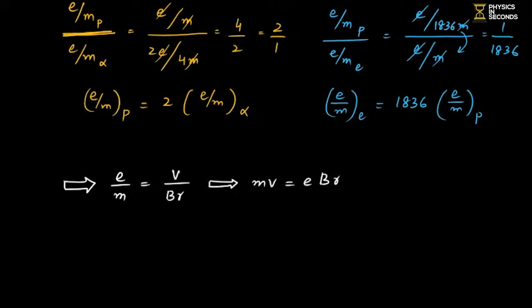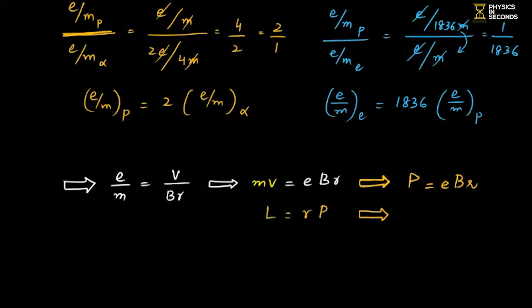So linear momentum p = mv = eBR. For angular momentum: L = r × p; with angle 90°, L = r × eBR = eBR². This gives the angular momentum relation for a charged particle in circular motion in a magnetic field.